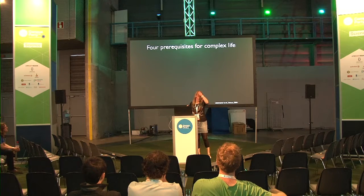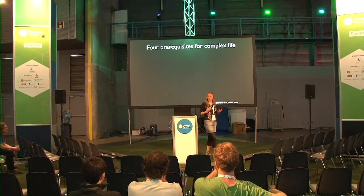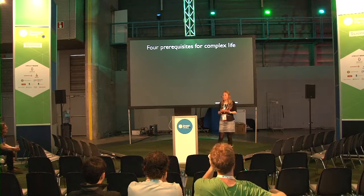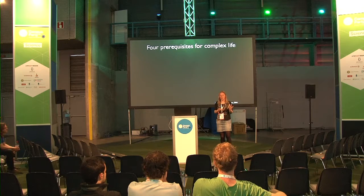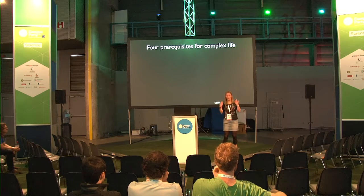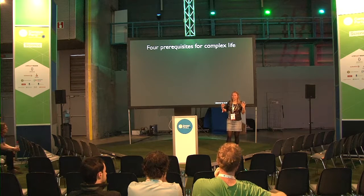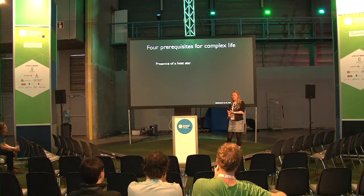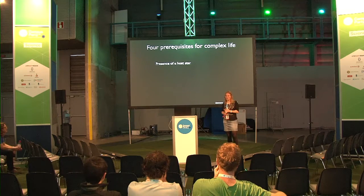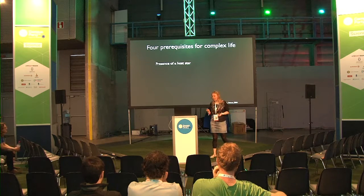A few years ago — twelve years ago actually — researchers came up with four prerequisites for complex life. We're not talking about unicellular organisms now, but about more complex life like us. That's also something you would have to take into account if you want to send a human mission somewhere else. First, it seems that we need the presence of a host star, because you need some energy source, and a host star generally provides that energy.